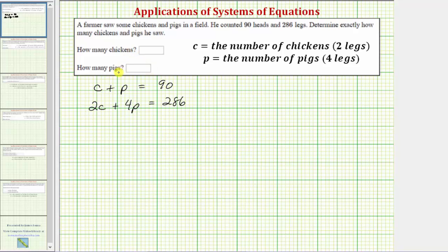Now to determine how many chickens and pigs there are, we need to solve the system of equations. The first step is to decide whether we want to solve the equation using substitution or elimination. Notice how we can easily solve this first equation for c or p. Let's go ahead and solve this first equation for c by subtracting p on both sides of the equation. If we subtract p on both sides, we'd have c equals 90 minus p.